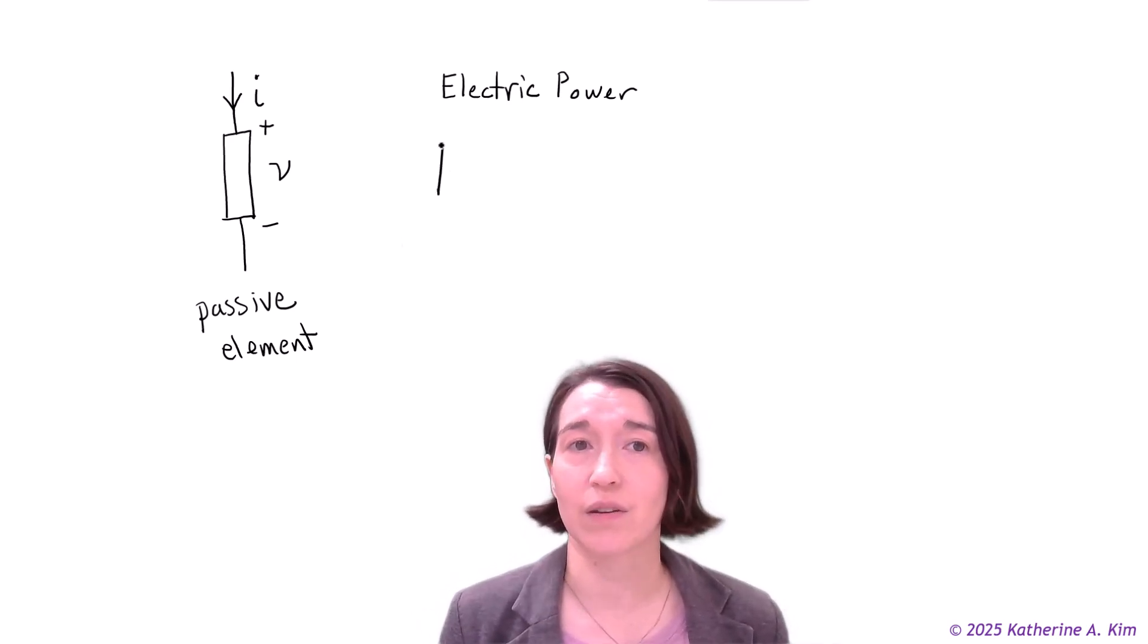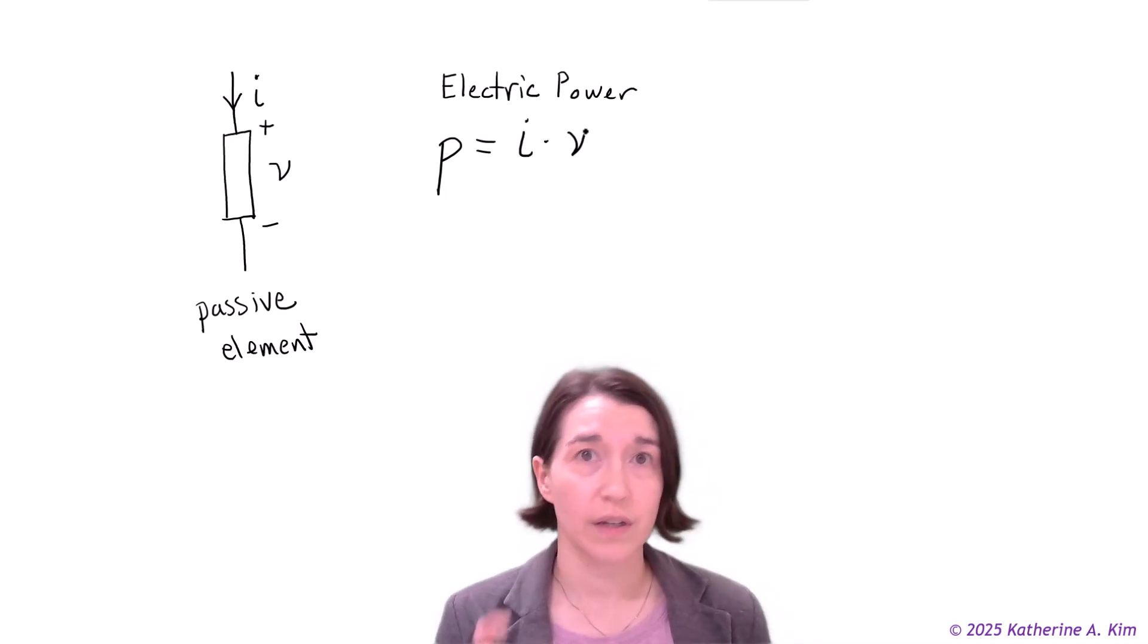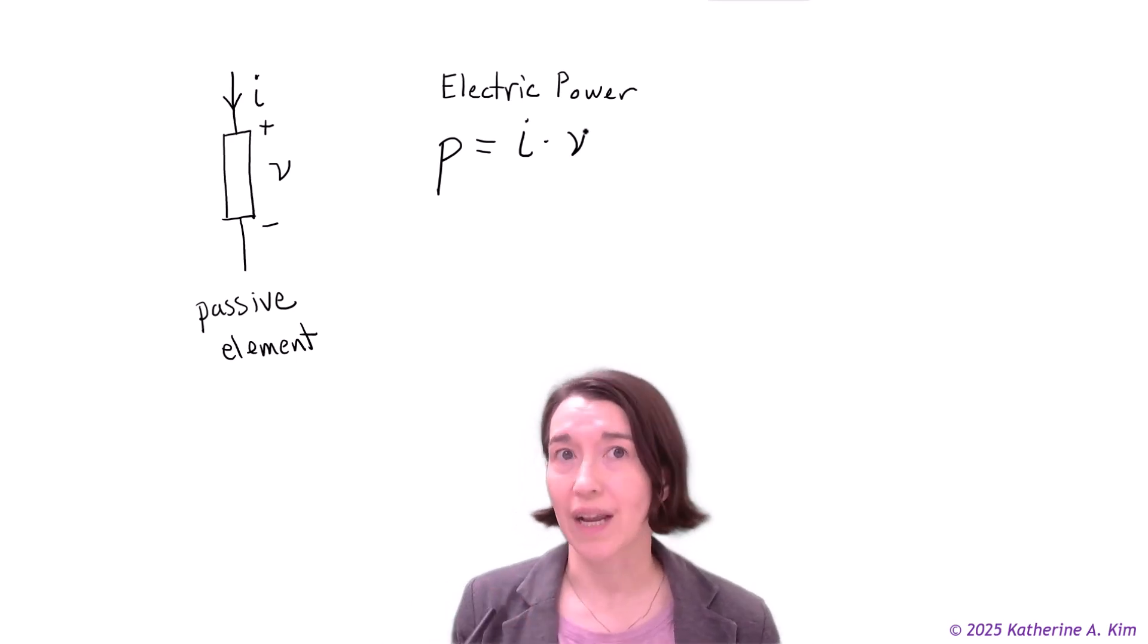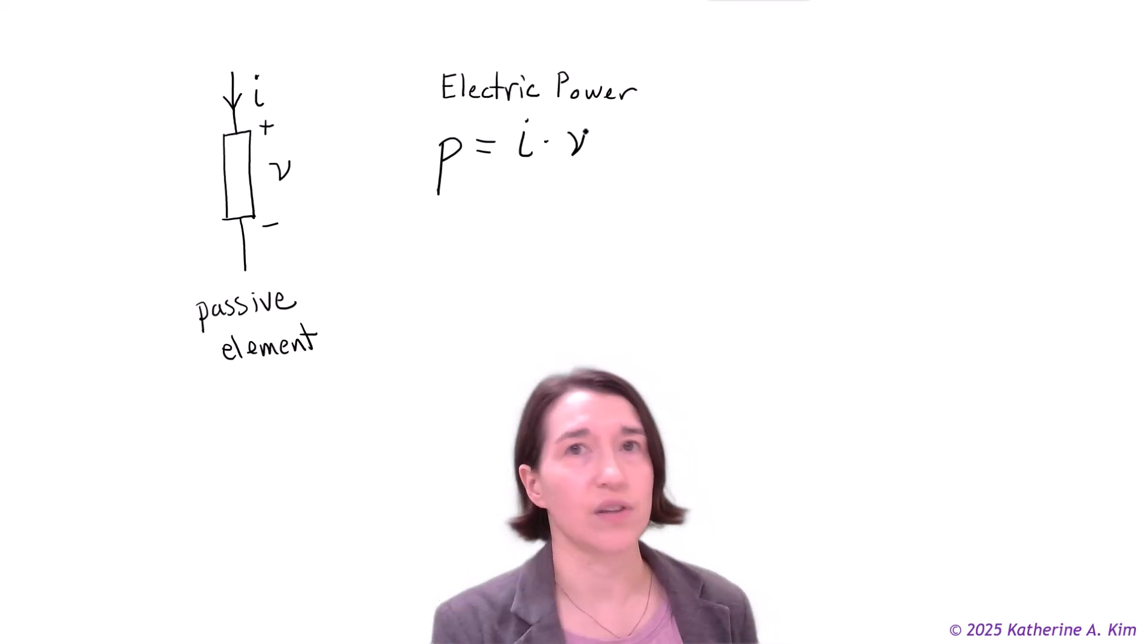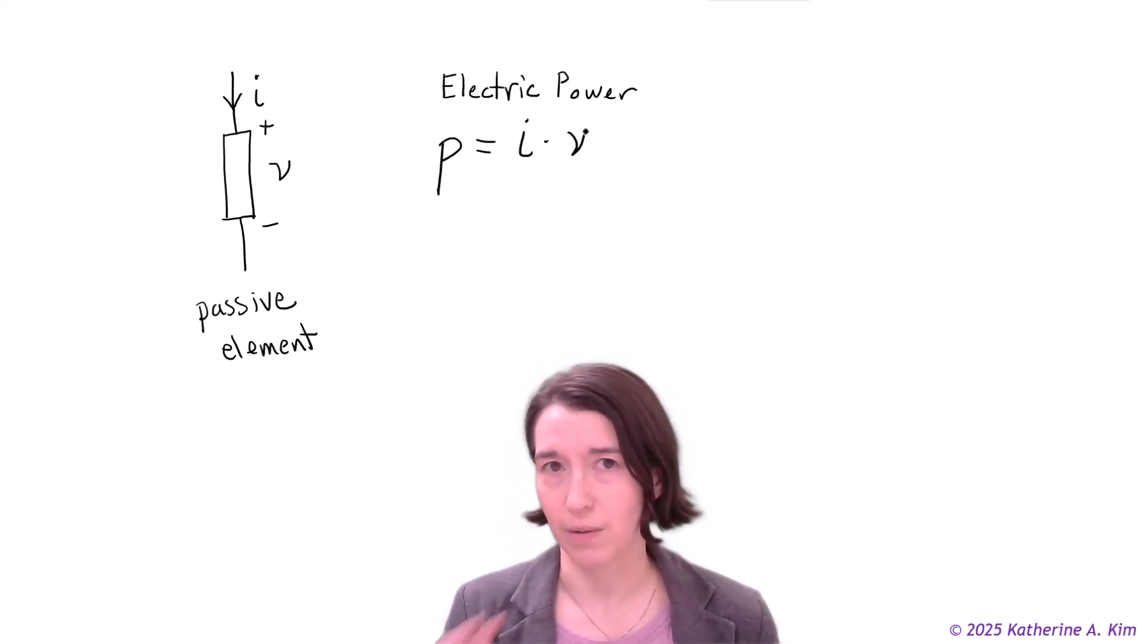That equation is p, the power, equals the current times the voltage. Note that these are lowercase values so this can be changing over time. This equation is still true. This is a definition.